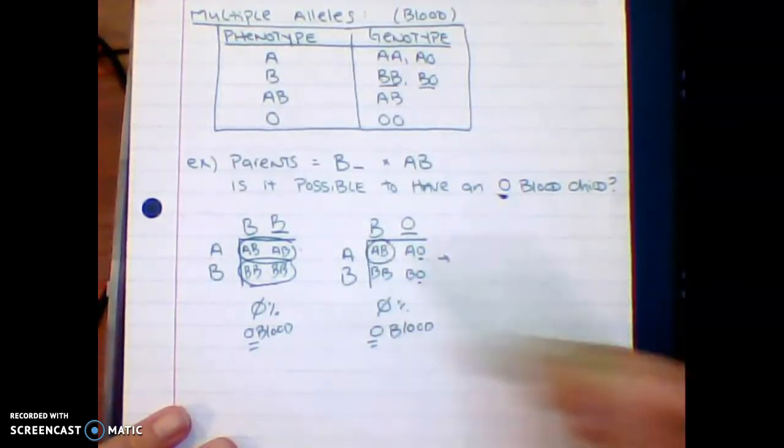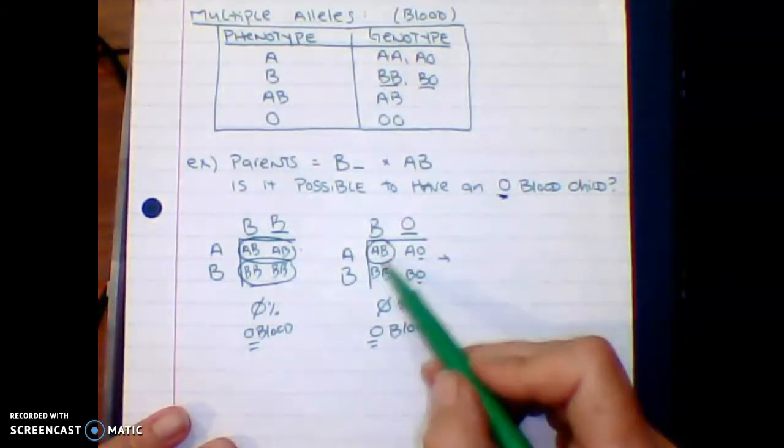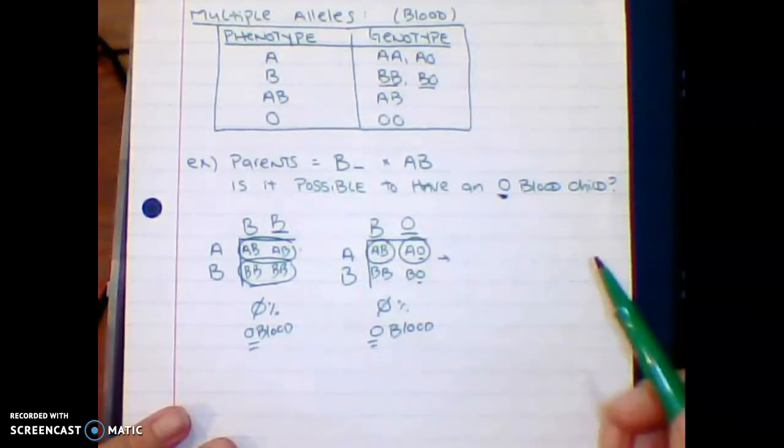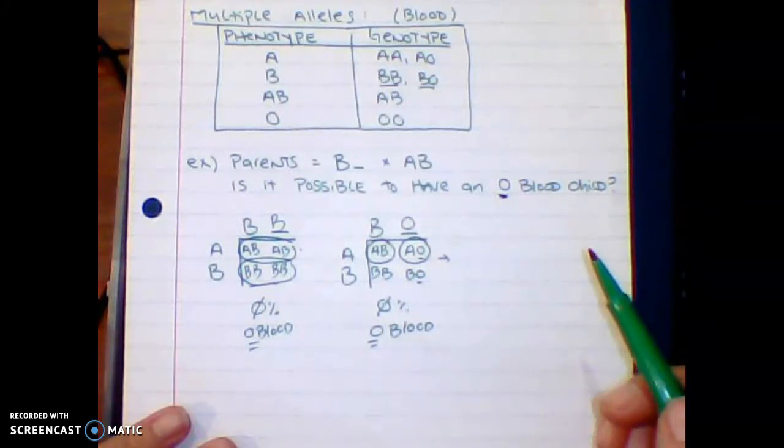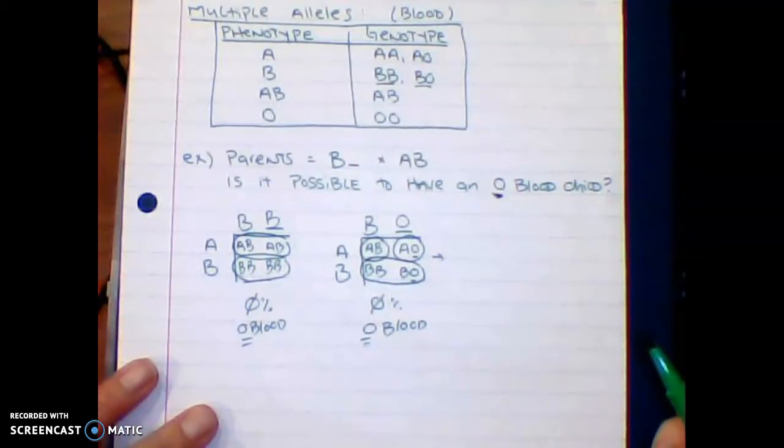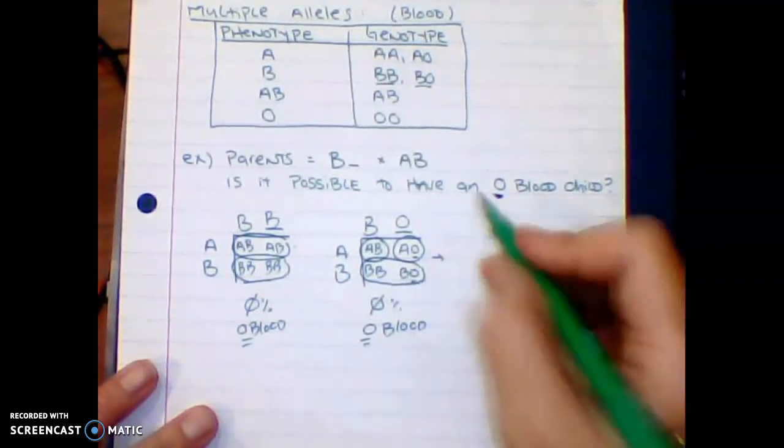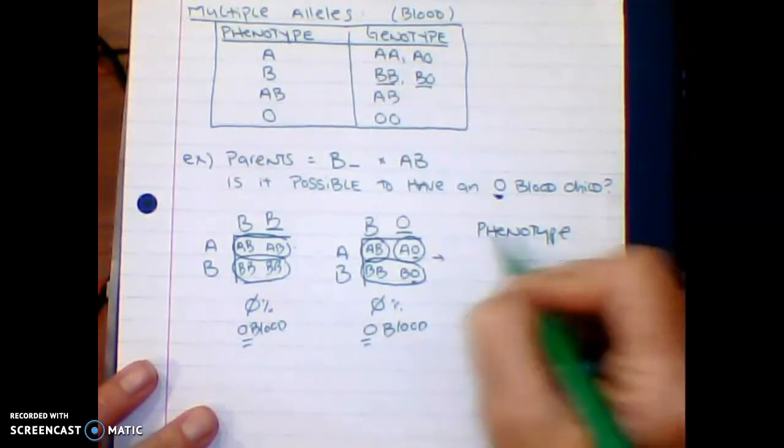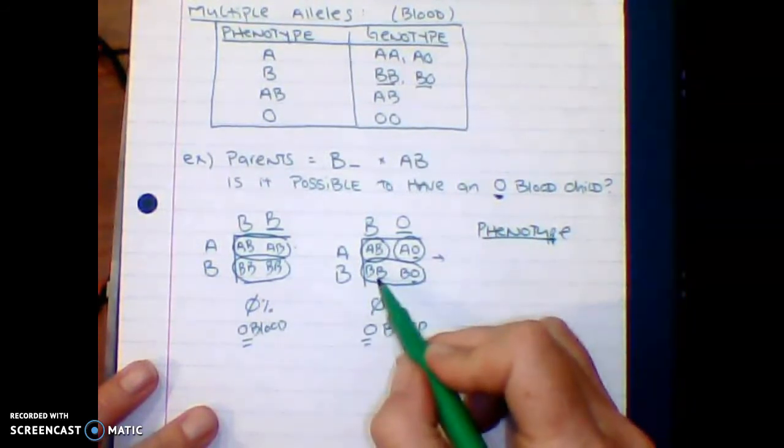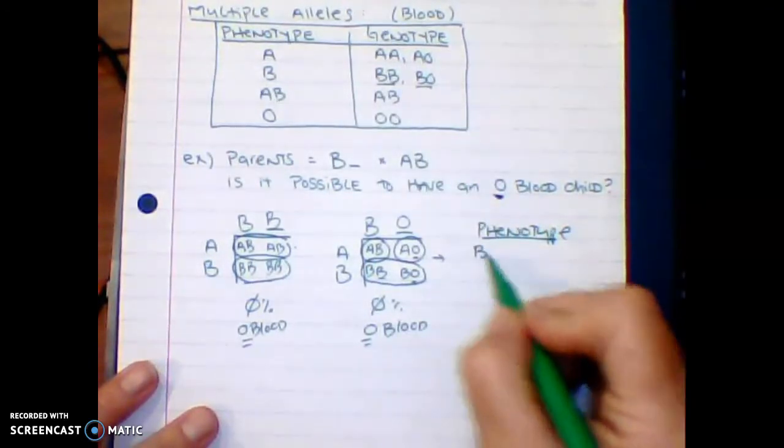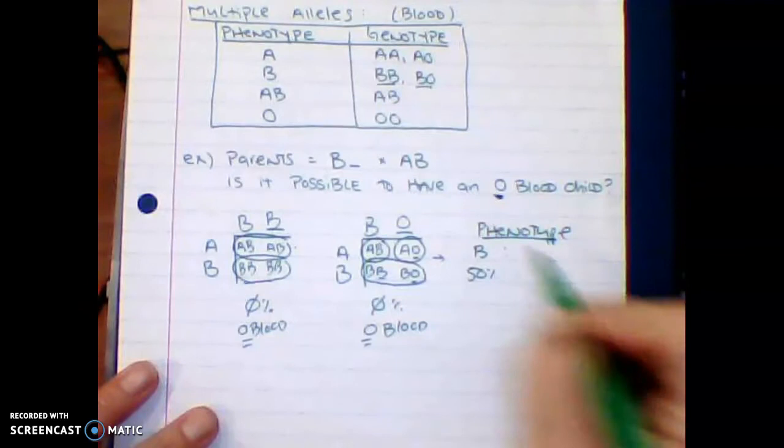But our choices now have shifted. We actually have 1 or 25% chance of having an AB child. You also have a 25% chance of having an A child, but you actually have a 50% chance of having a B child. So phenotypically, so remember, phenotypically, phenotype, to be B blood is either BB or BO.